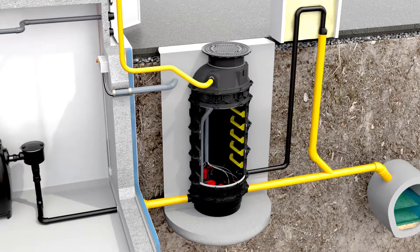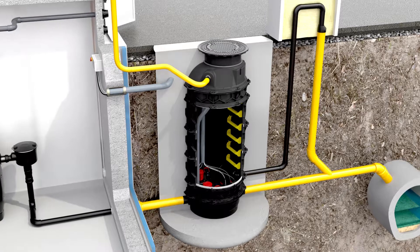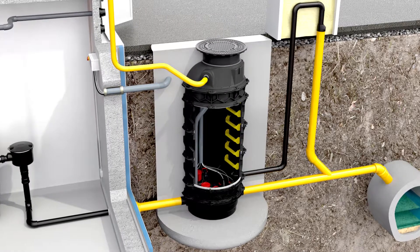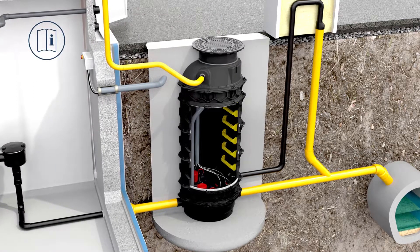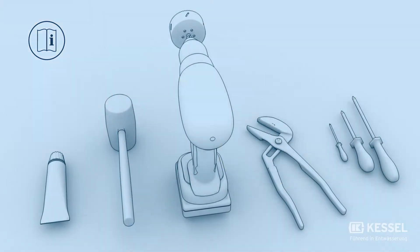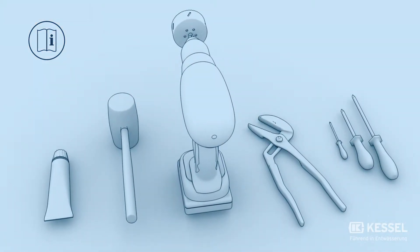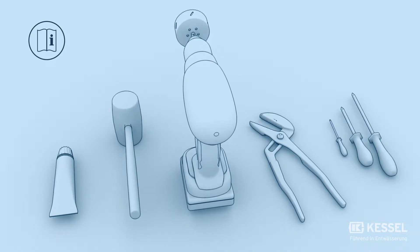Welcome to the installation of the backflow lifting station Ecolift XL and the equipment shaft system from Kessel. Please read the safety instructions in the operating manual and remember that this video is only a schematic representation and a supplement to the operating manual and not a replacement. Therefore, make sure to read the operating manual carefully before starting work on the system.